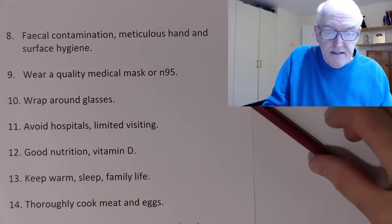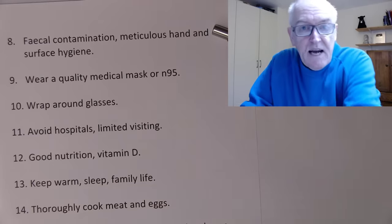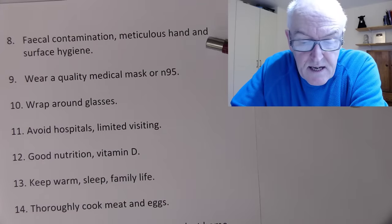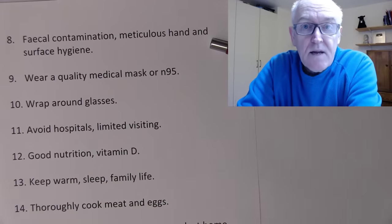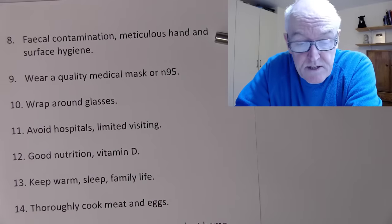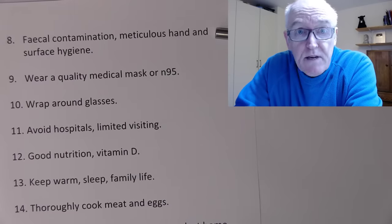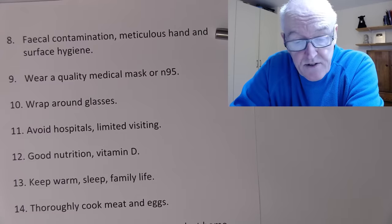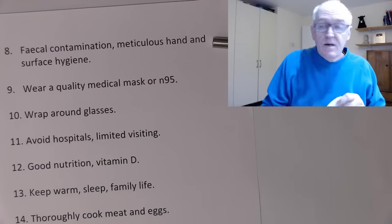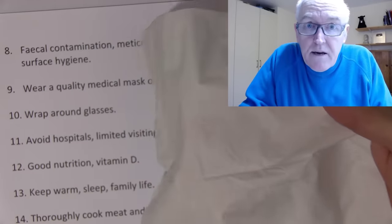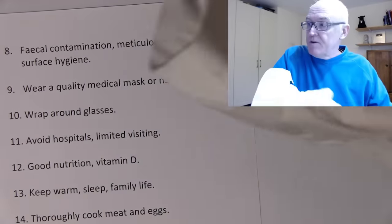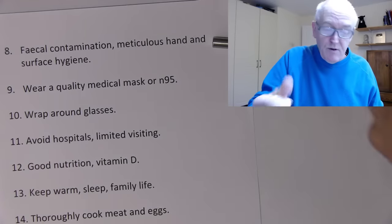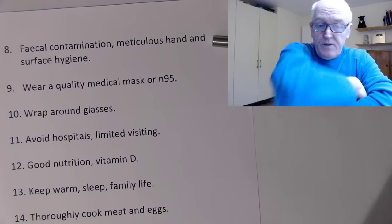Some viruses are spread in faeces, so meticulous hand hygiene after using the toilet is important. In a public toilet, when you flush, the virus could aerosolise out into the air — we don't know if this happens with all viruses, but it does with some. So put the lid down before flushing. After washing your hands thoroughly, use a tissue to open the toilet door, then crumple it up and bin it. When turning off the tap, use your elbow — more on that in the next video.